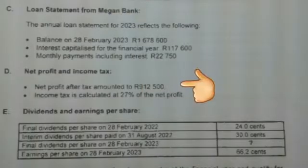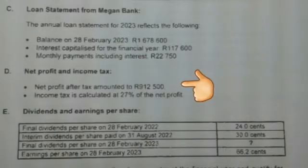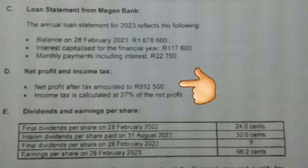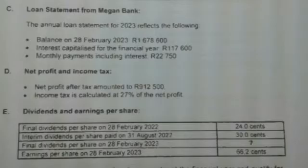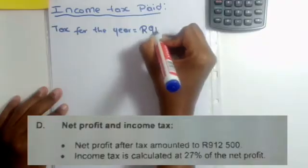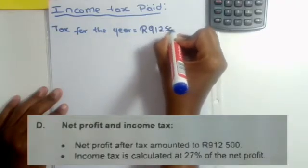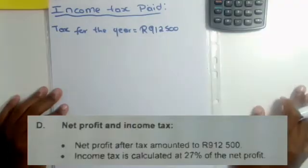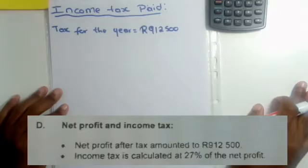For income tax, we have Information D, which shows us net profit that amounted to nine hundred and twelve thousand five hundred. They tell us in the second bullet that income tax is calculated at twenty-seven percent of net profit. Usually when we have net profit before tax we just take that amount and multiply it by twenty-seven percent, but in this case what we have is net profit after tax — meaning this amount of nine hundred and twelve thousand five hundred has already had tax subtracted out of it. So this represents only seventy-three percent, not the full hundred percent.